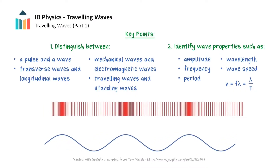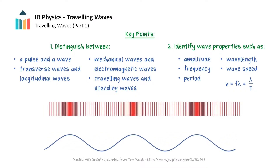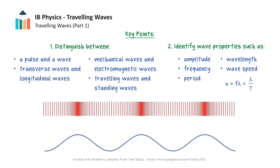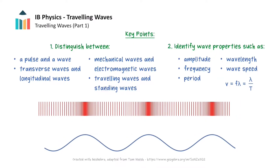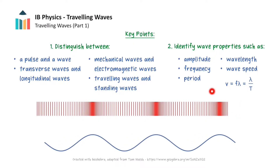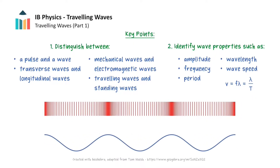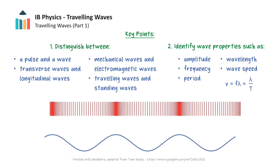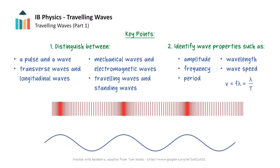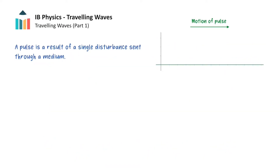We will also look at various wave properties that are used to describe waves, such as amplitude, frequency, period, wavelength, and wave speed. Let's consider a taut horizontal rope.